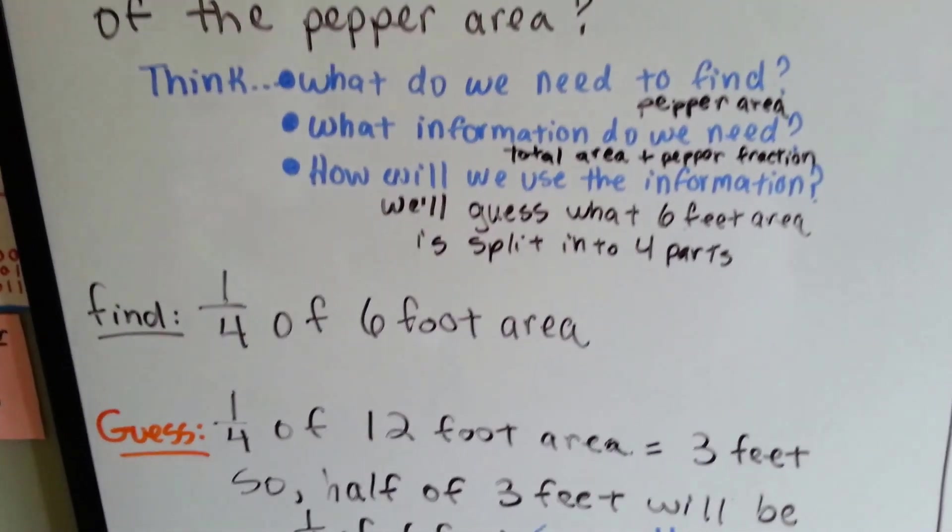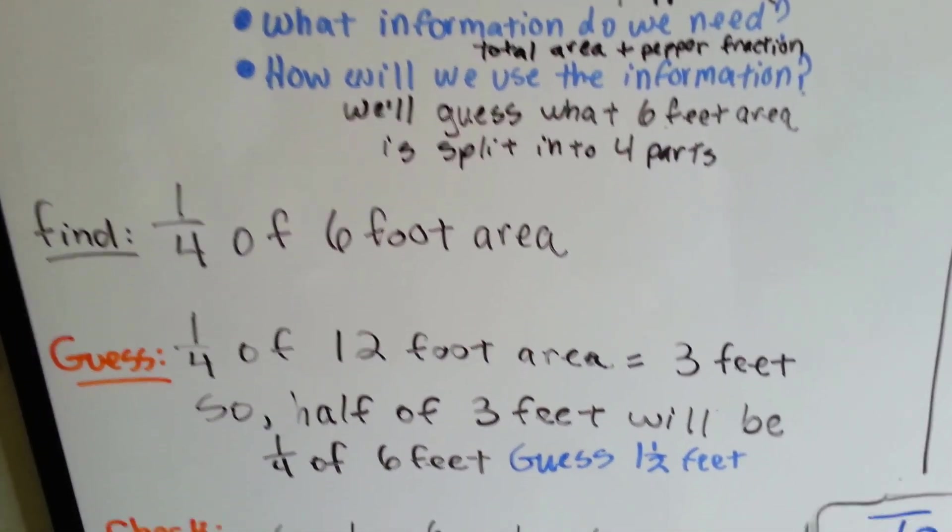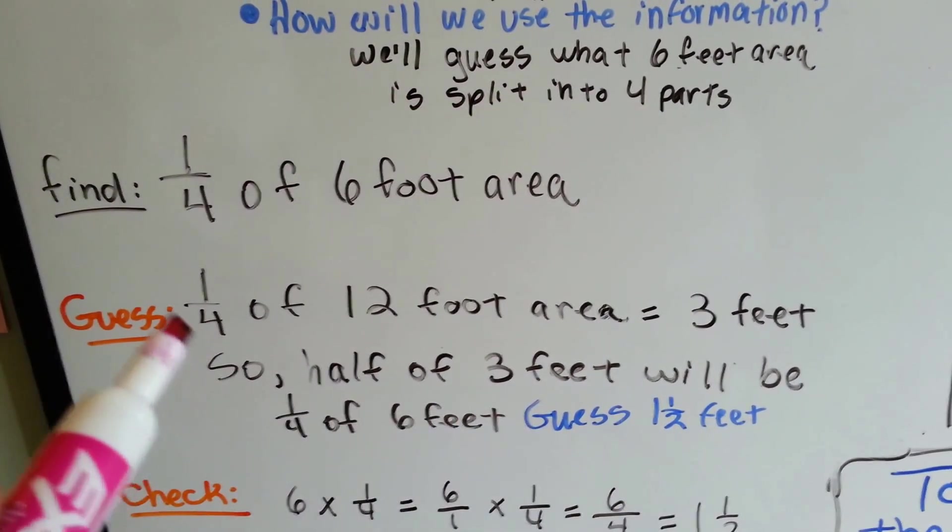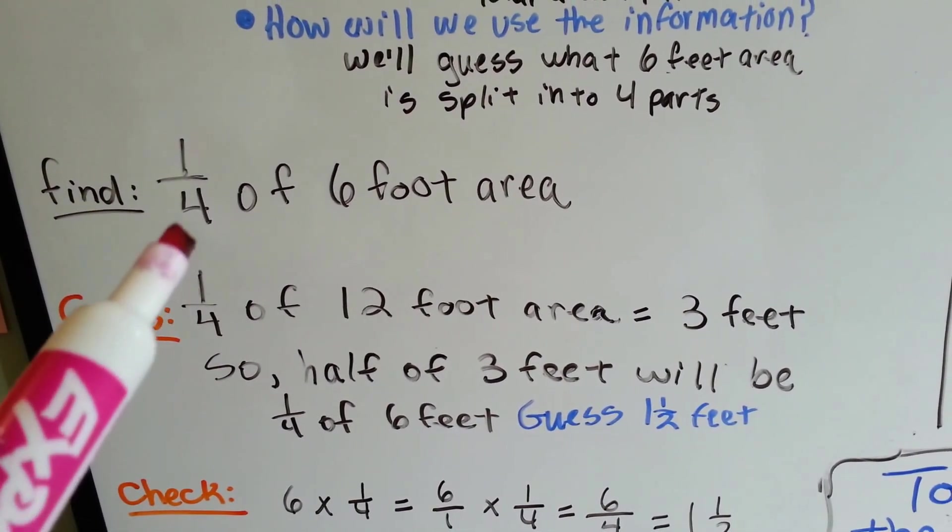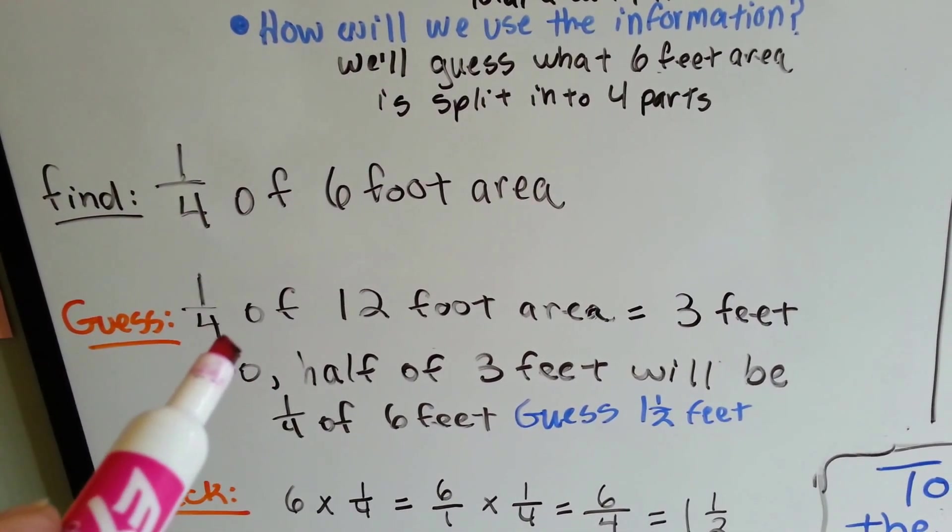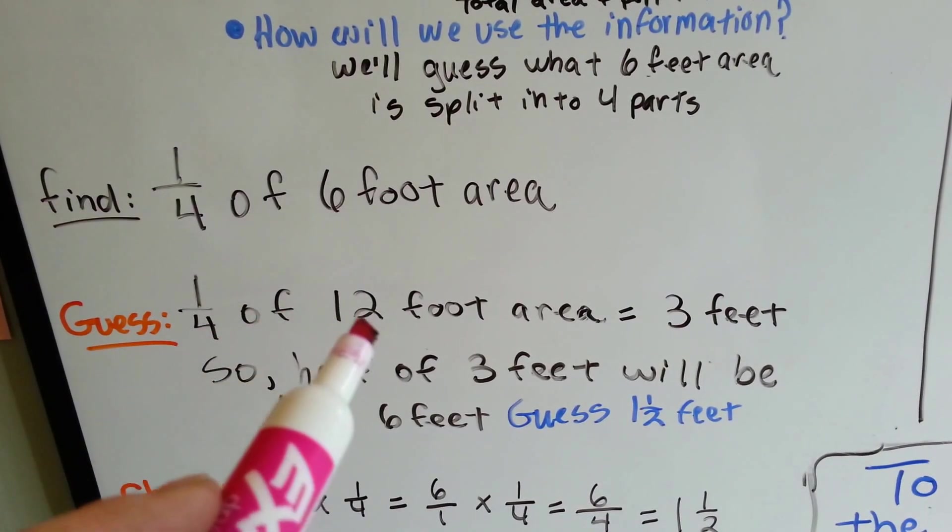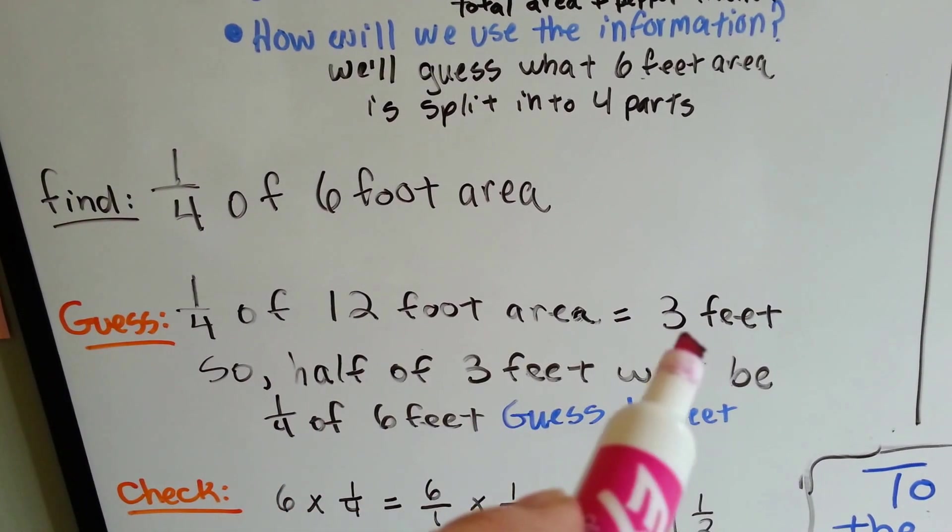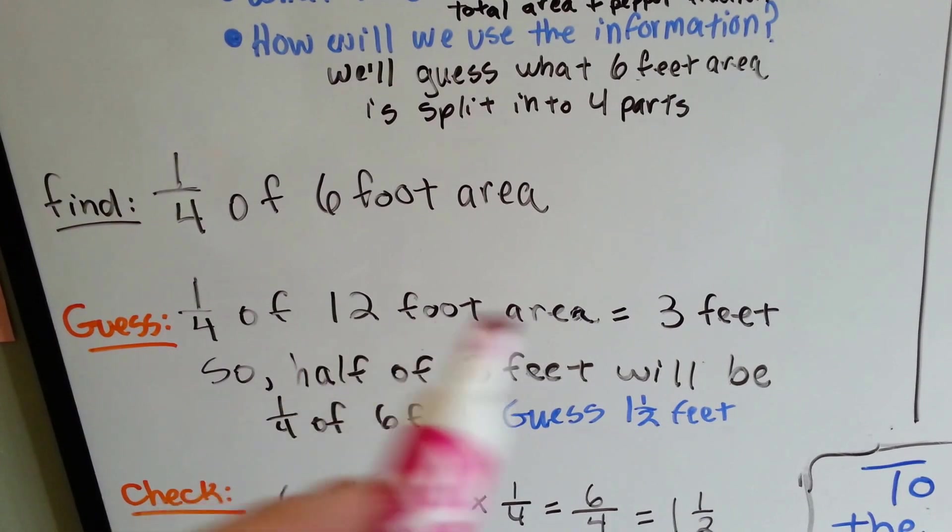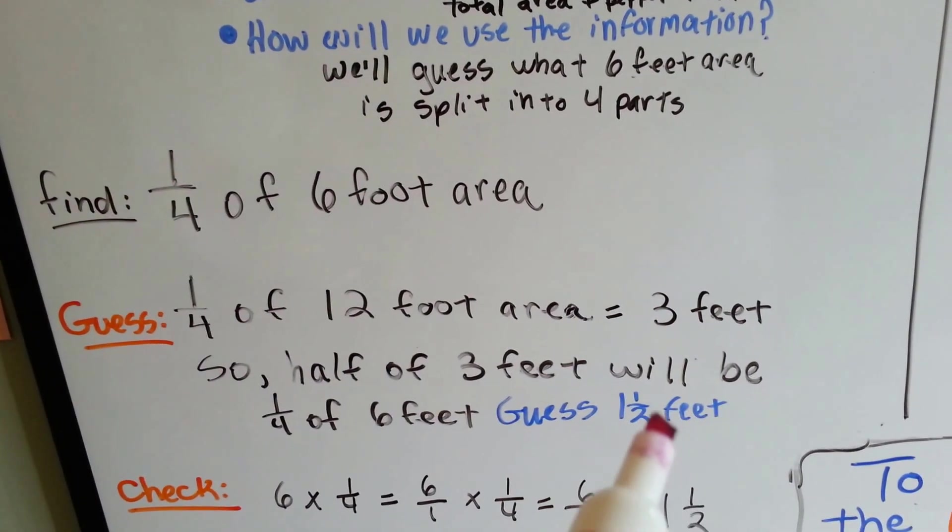So I'm guessing it's going to be about a foot and a half. So we need to find one-fourth of a six-foot area. So our guess is going to be one and a half feet, because I figured if we need to find a fourth of six feet, it would be easier to split up a fourth of twelve feet, because four goes into twelve easier. One-fourth of a twelve-foot area would be three feet. Because six feet is half of twelve, then I figured that for our six-foot area, I could cut the three feet in half to be one and a half.